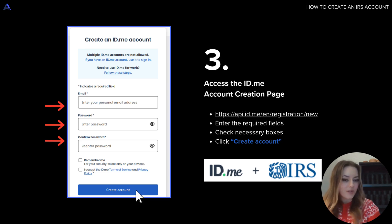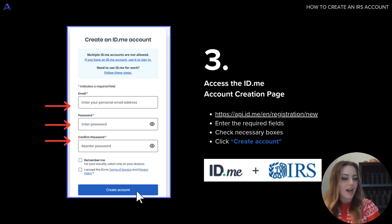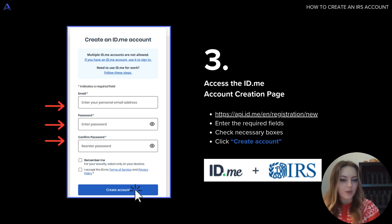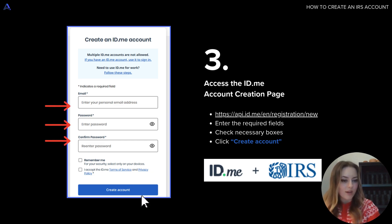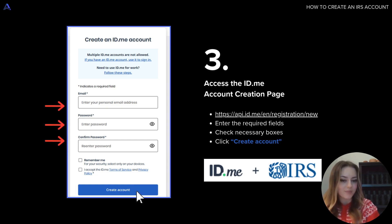Once you have all of this ready and you're on the IRS website, you can access the id.me account creation page. I've also attached the URL above here which you can visit if you have trouble finding it. So just make sure you enter the required fields, check the necessary boxes, and click the blue create account button to get started.